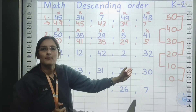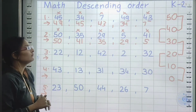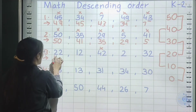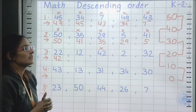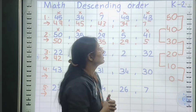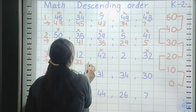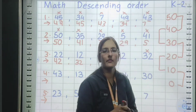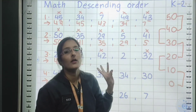Moving to question number 3. The numbers are 22, 12, 42, 2, and 32. Start from 50 to 40. Any number? Yes — 42. Put cross sign, write 42, comma. Next line 40 to 30 — is 32 there? Yes. Put cross sign, write 32, comma. Now for the line 30 to 20, always remember this is backward counting: 30, 29, 28, 27, 26. You have to go in a backward way.